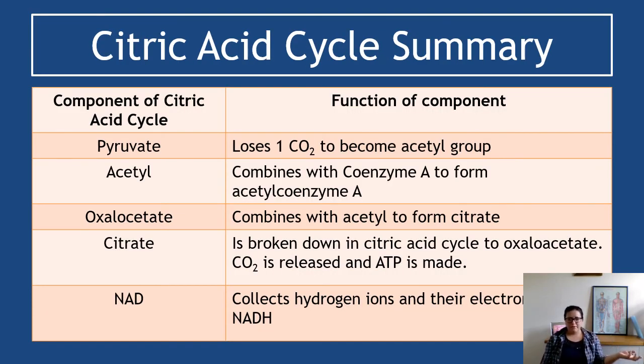To summarize, pyruvate loses one CO2 to become an acetyl group. Acetyl combines with coenzyme A to form acetyl coenzyme A. Oxaloacetate combines with acetyl to form citrate. Citrate is broken down in the citric acid cycle to oxaloacetate over the chain of reactions, the wheel of evil. Carbon dioxide is released and ATP is made. NAD collects hydrogen ions and their electrons to form NADH. The only thing missing from there is dehydrogenase enzymes. This slide is really going to help you. I'd get them made up as flashcards because I actually think that this slide is enormously useful in just stating the rules of the main things that you need to know.